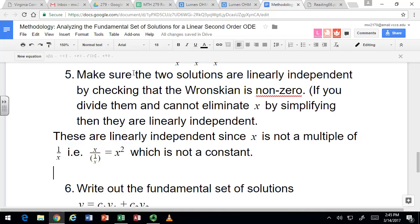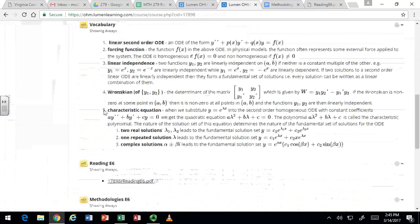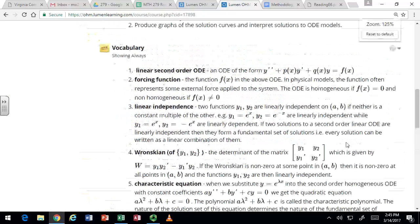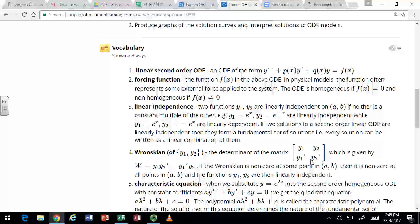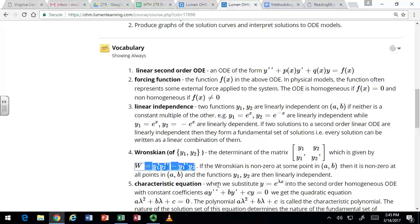Now we can also set up this Wronskian, which is the determinant of that matrix. So we'll do a matrix where the first row is the two solutions and the second row are the two derivatives, and then do the determinant of that, and it defines the Wronskian.